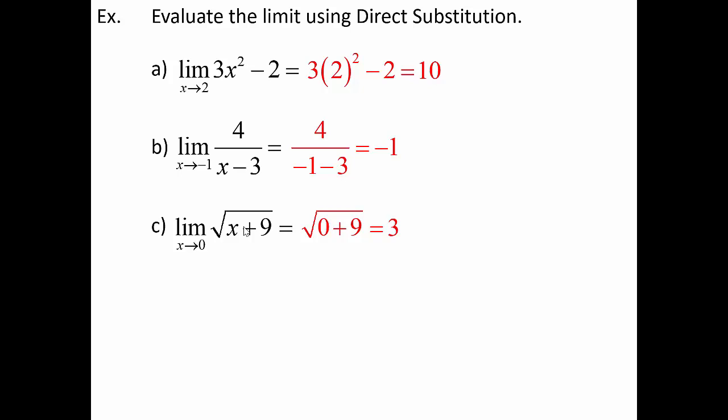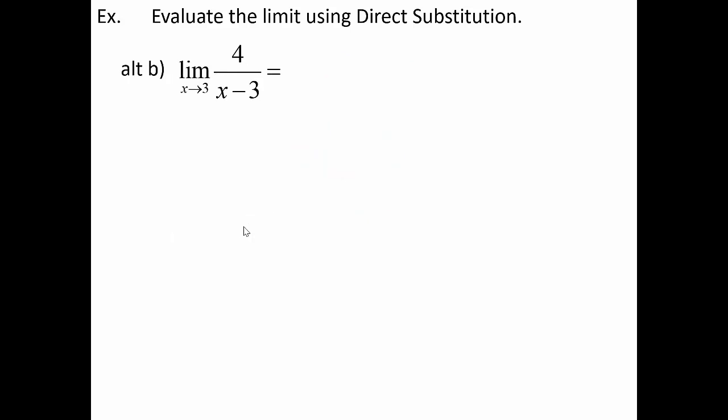But what about when direct substitution doesn't work? For 4/(x - 3), what if we take the limit as x approaches 3? The denominator equals zero at x = 3, so plugging in gives 4/0, which is undefined. This function has a vertical asymptote at x = 3 — not a hole. With a vertical asymptote, the graph goes up and down forever on either side, so there is no specific intended height. There is no limiting value.